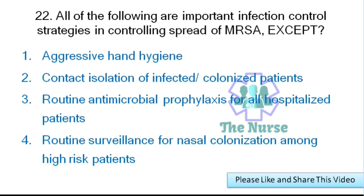Next question: All of the following are important infection control strategies in controlling the spread of MRSA (Methicillin-resistant Staphylococcus aureus) except which? Options: aggressive hand hygiene, contact isolation of infected/colonized patients, routine antimicrobial prophylaxis for all hospitalized patients, or routine surveillance for nasal colonization among high-risk patients. Correct answer: routine antimicrobial prophylaxis for all hospitalized patients is the incorrect strategy.